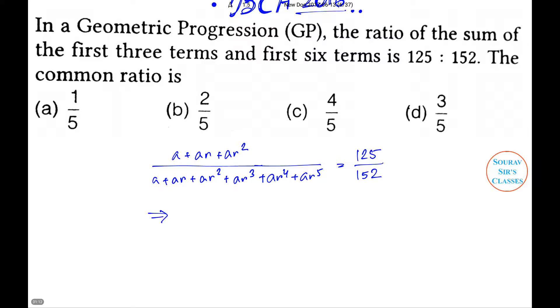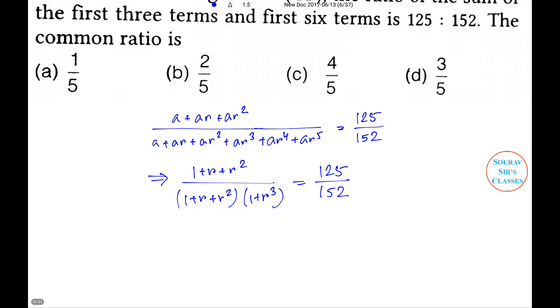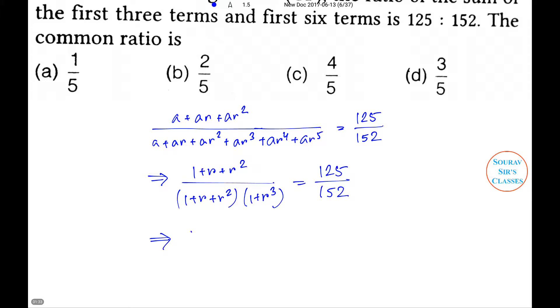That implies 1 plus r plus r squared divided by 1 plus r plus r squared into 1 plus r to the power cube, that equals 125 divided by 152.